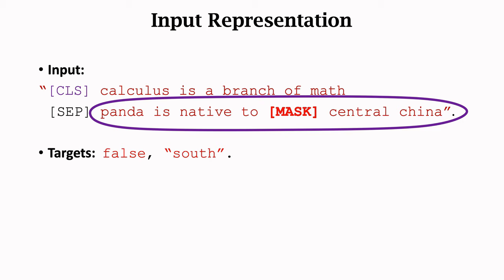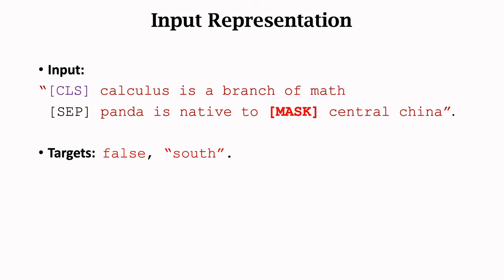In this example, the second sentence is panda is native to mask central China. It is not the real next sentence. So the first target is set to false. The masked word is south. So we set the second target to south.